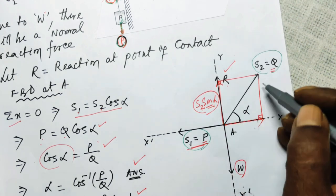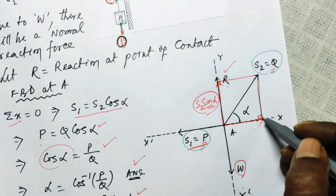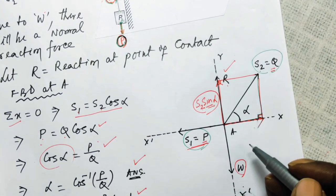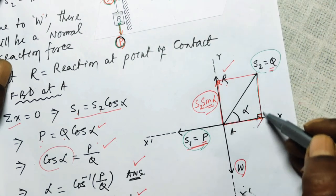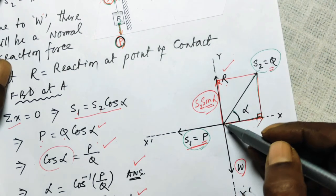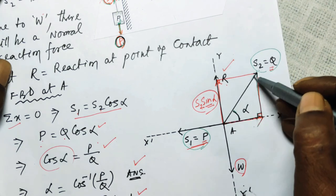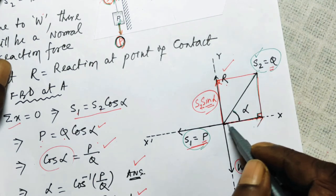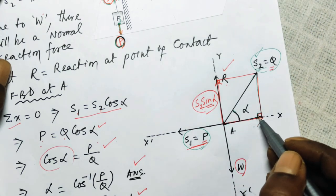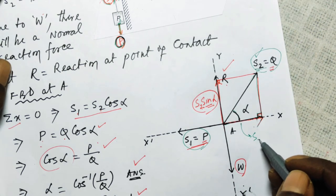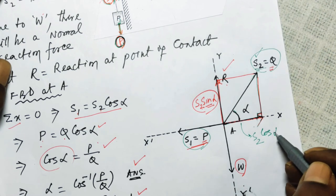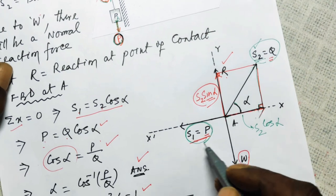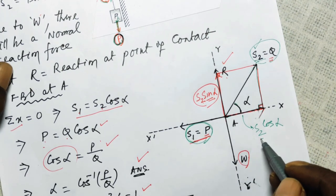From point A, if you drop a perpendicular, this will be 90 degrees. In this triangle, taking cos of alpha gives base over hypotenuse, where the hypotenuse represents S2. Cross-multiplying gives the component of S2 along the positive x-axis as S2 cos alpha. To this side is S1, which equals P. Since it is in equilibrium, S1 equals S2 cos alpha.